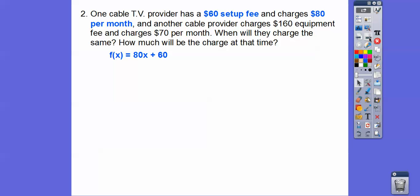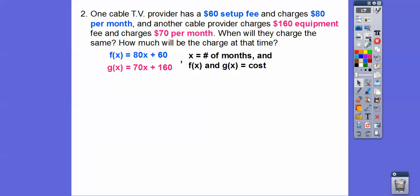So there's our y equals mx plus b. And there's our other y equals mx plus b. So X is the number of months. And F of X and G of X are the cost right there. So we go ahead and set those equal to each other and then solve. So we get X equals 10 right there.